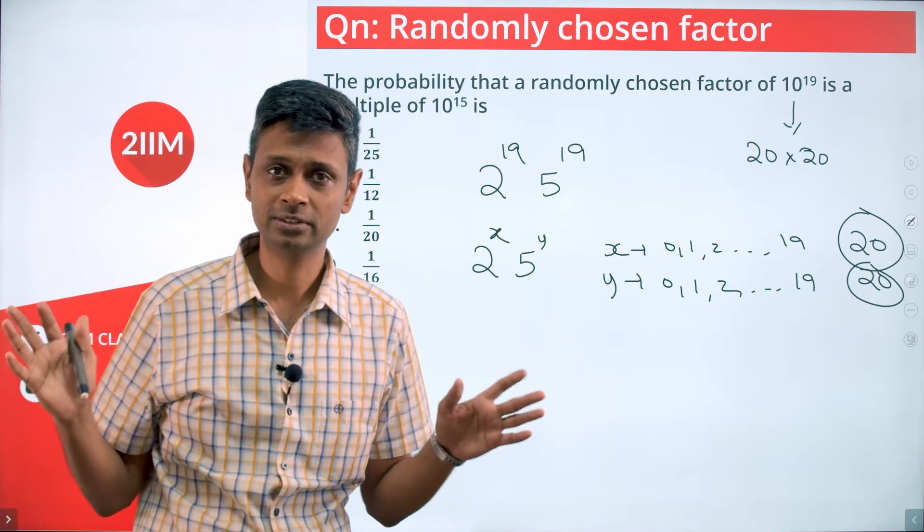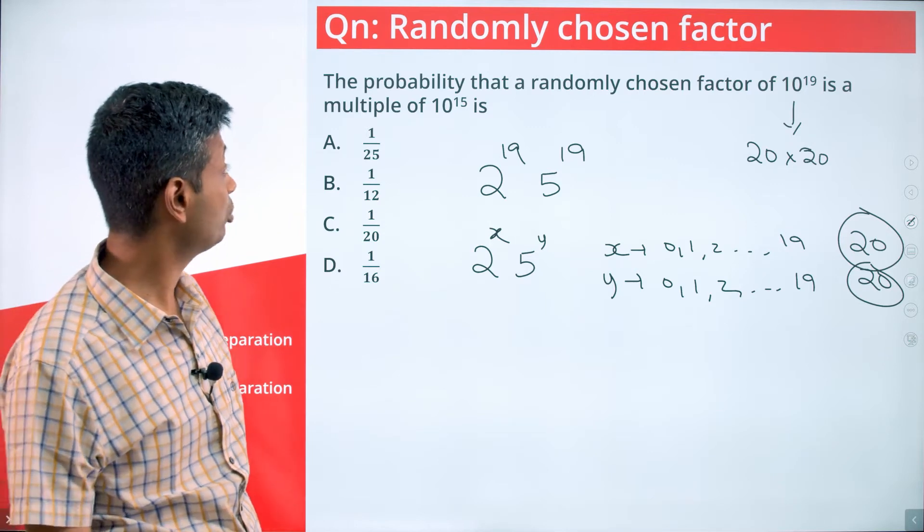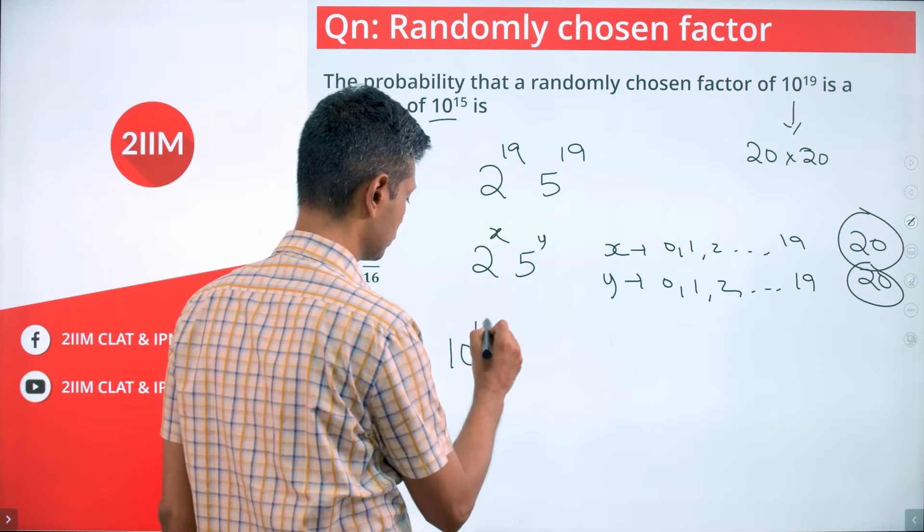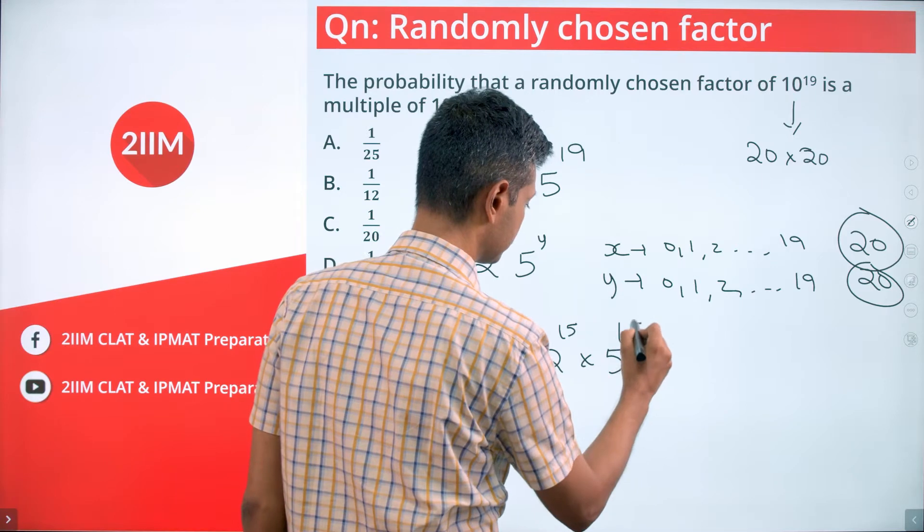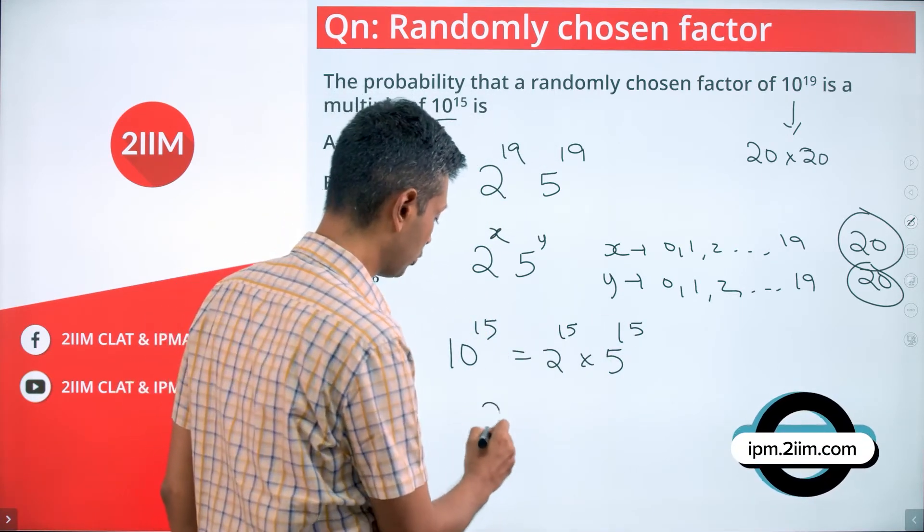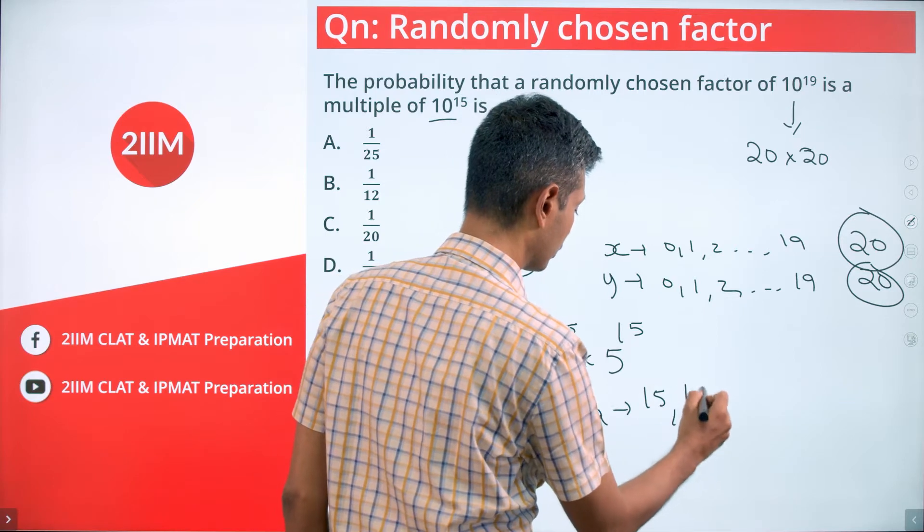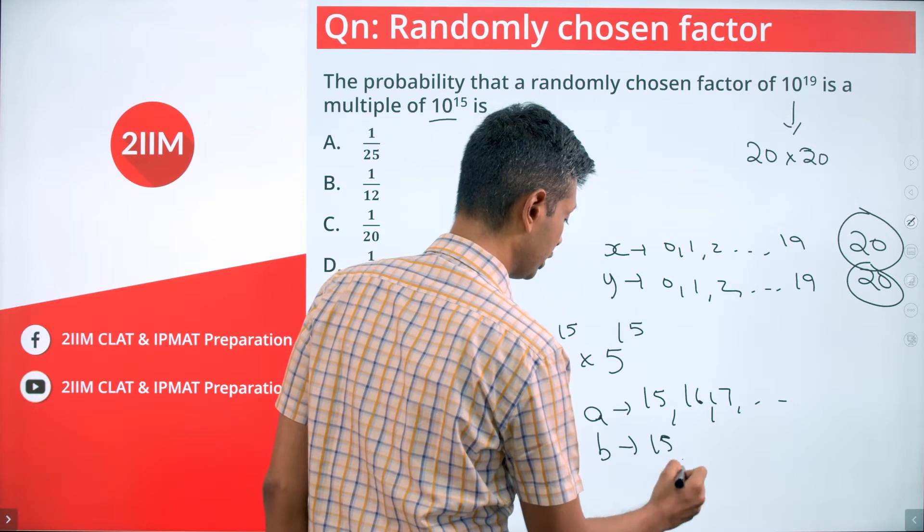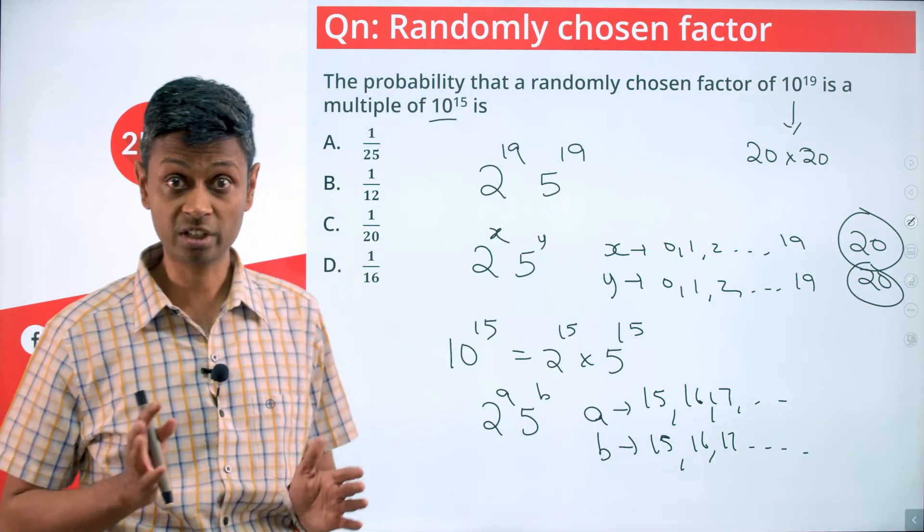That's the total of all factors. From that we are selecting one. What is the probability that will happen to be a multiple of 10 power 15? 10 power 15 is 2 power 15 into 5 power 15. If you want any number to be a multiple of this, it will have to be the form 2 power a into 5 power b where a is 15 or more and b is also 15 or more.